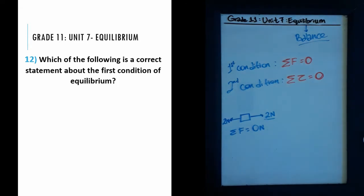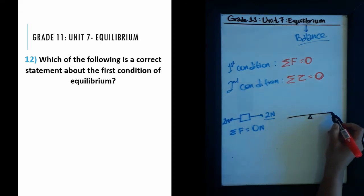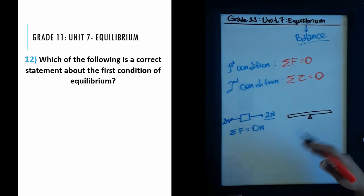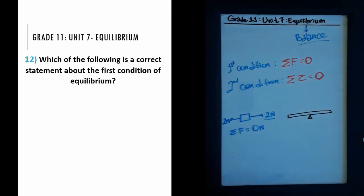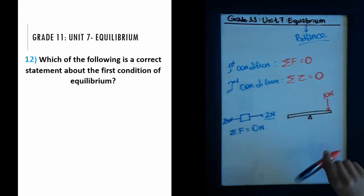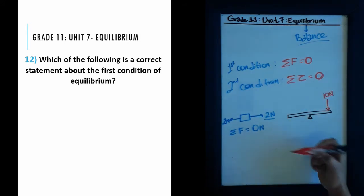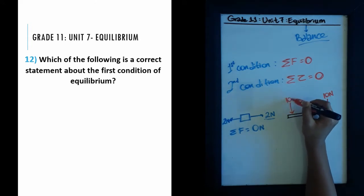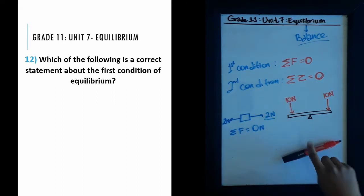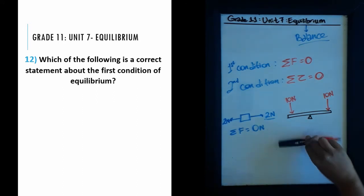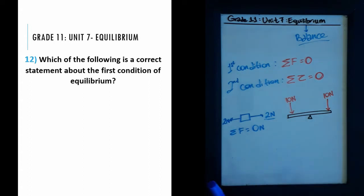For the second condition, consider a seesaw. If a kid sits on one side pushing down with 10 Newtons, the seesaw turns — that's torque, the rotational force acting on a body. It turns clockwise. But if an equally heavy kid sits on the other side with 10 Newtons, that turns it counterclockwise. The two 10-Newton forces balance out, placing the seesaw in equilibrium.